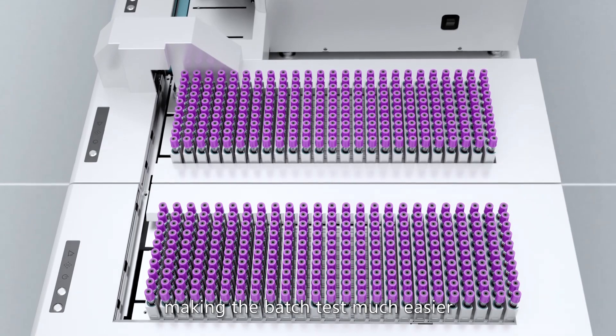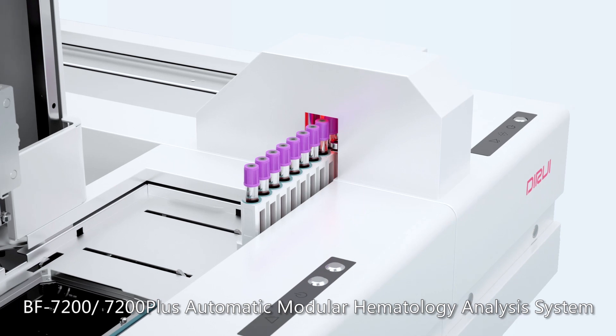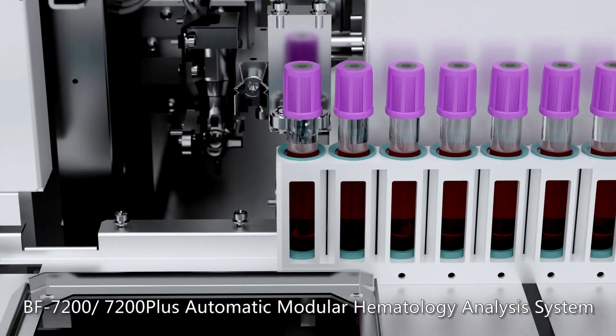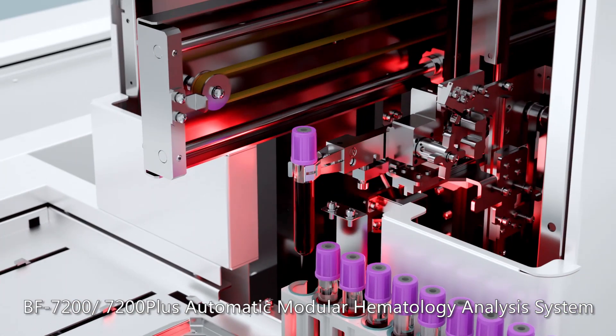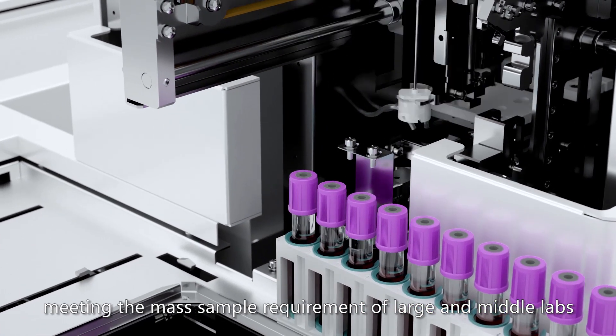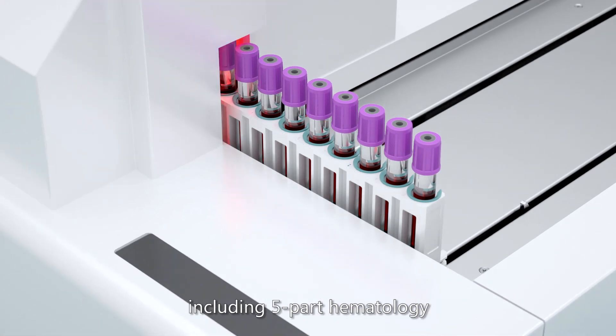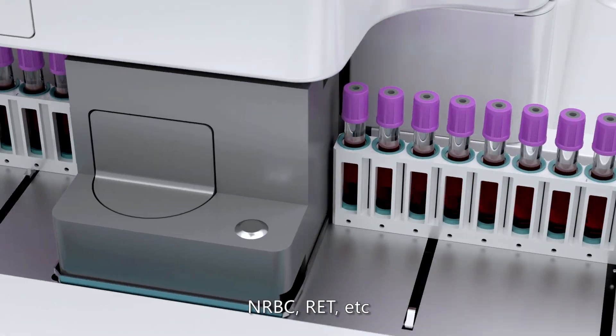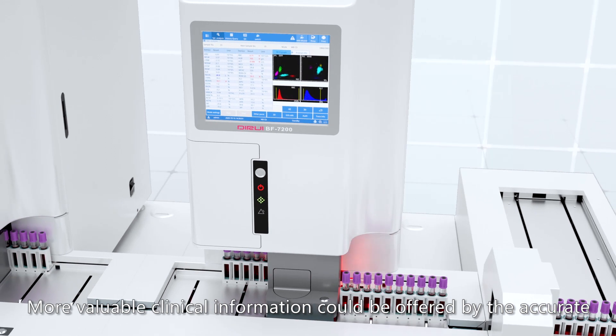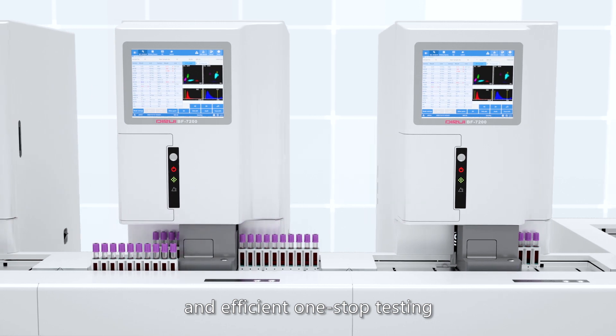Efficiency, fast and efficient detection. BF7200, 7200 Plus can be up to 480 tests per hour, meeting the mass sample requirement of large and middle labs, realizing full-parameter blood tests including five-part hematology, N-RBC, RET, etc. with one tube of blood sample. More valuable clinical information could be offered by the accurate and efficient one-stop testing.